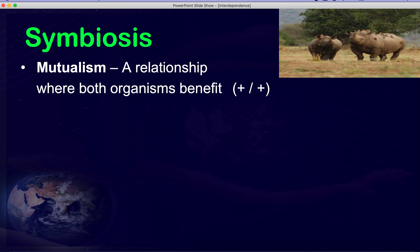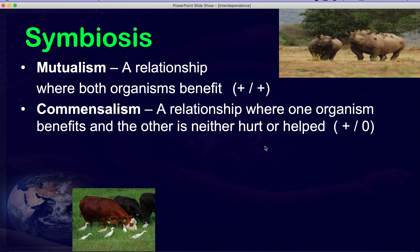The first type is mutualism — a relationship where both organisms benefit. For example, a rhino and the birds on its back: the birds eat parasites off the rhino and the rhino gets cleaned. Both benefit, so this is a plus-plus type of relationship, known as mutualism.